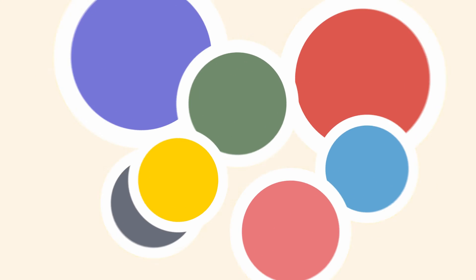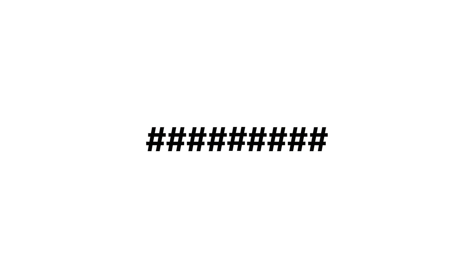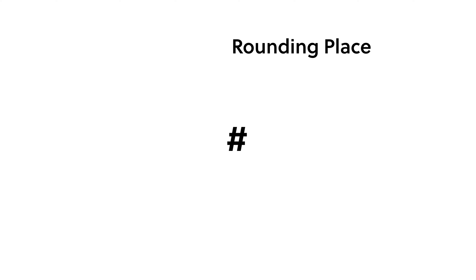Here are the details. When we write a number in our place value number system, digits to the left are typically considered more significant than those to the right. To round a number, we first decide the last place — the least significant place — that we want to keep. We call this the rounding place, indicated by r.